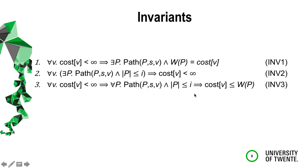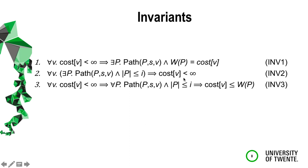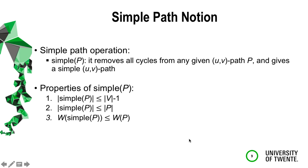From those post-conditions we propose three invariants that should hold at line 5 in each round of the algorithm. These invariants come exactly from the post-conditions but we bound the length of the path to i, the loop variable. We also introduce the notion of simple path: an operation that for each path p removes all cycles and returns a simple path where all vertices are unique. We prove three properties of the simple path needed in our proof.